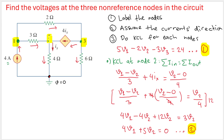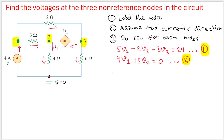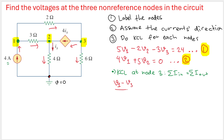We have three variables but only two equations, so we need one more from node 3. Let's do KCL at node 3. The current coming in is from node 1 to node 3: (V1 - V3) divided by 2 ohms. All currents at node 3 are going out, and one of them is 4ix going out.